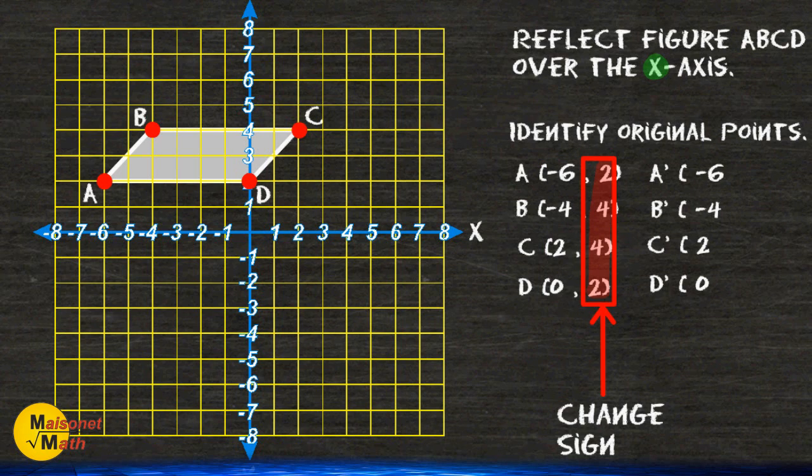And for the y values we are simply going to change the sign. Notice that all of our y values are positive so we are going to write the same number but change all of those positives to negatives.